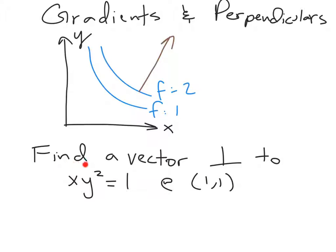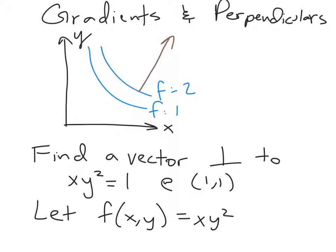For example, imagine I'm in the xy-plane and I want to find a vector perpendicular to the curve specified by xy² = 1 at the point where x is 1, and thus y is 1. I can make up a function f(x, y) that has xy² = 1 as one of its level sets. The easiest such function to make up is just f = xy², and then this curve of interest is now the one level set.